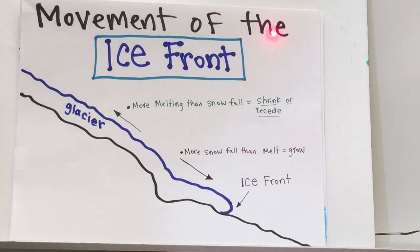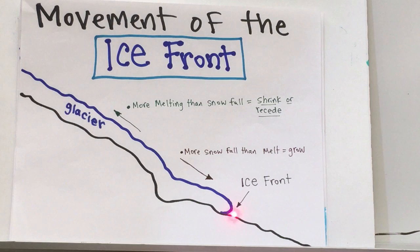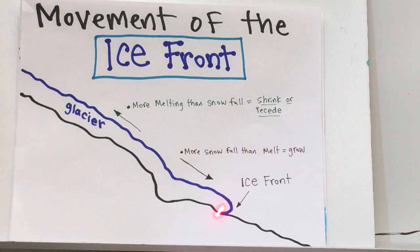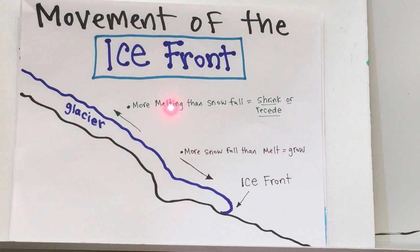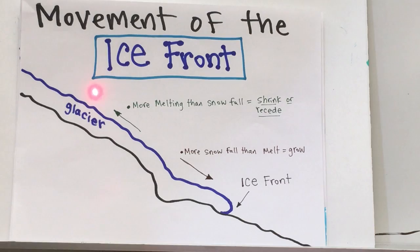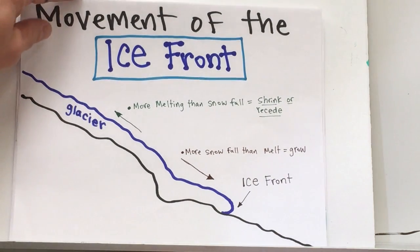Movement of the ice front — this is your ice front. If you get more snowfall than melt, the glacier is going to grow and the ice front will continue to progress downhill. If you get more melting than snowfall, the glacier will shrink or recede. Recede is the backward movement of the glacier.